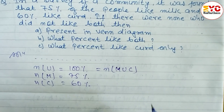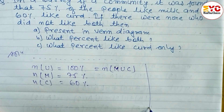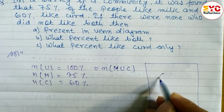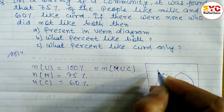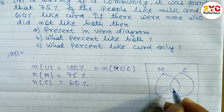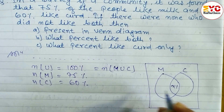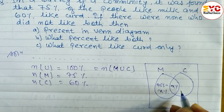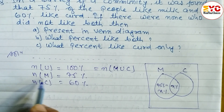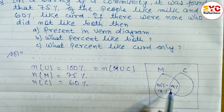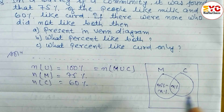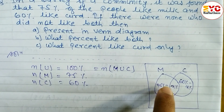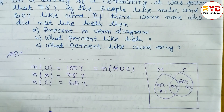For part one, let's draw the Venn diagram with two overlapping sets — one for milk and one for curd. Let X% represent the intersection (those who like both). So the milk-only region is (75 − X)% and the curd-only region is (60 − X)%. The area outside both sets is zero, since every person likes at least one.